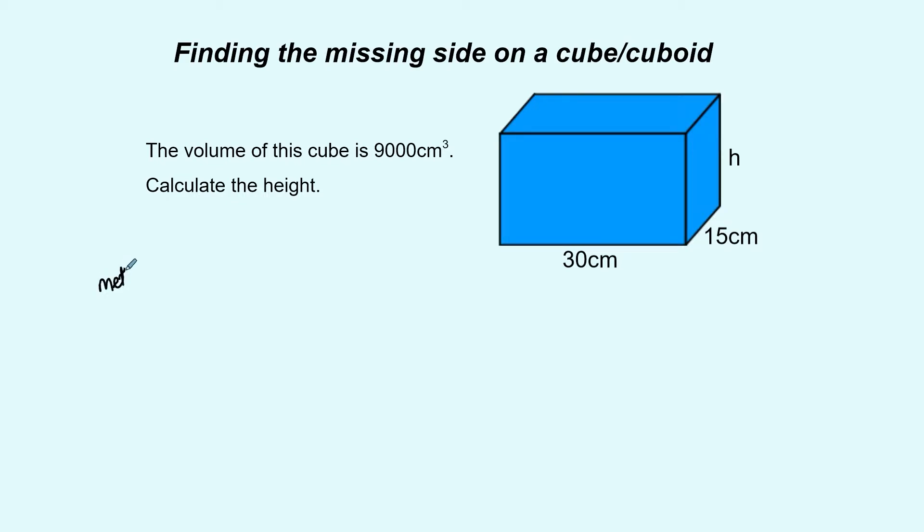So method one would be we know that we're dealing with volume. What we can do is it's a cuboid so the volume is the length times the breadth times the height and we know that formula and it's exactly the same as we do if we were looking for the volume of the shape.